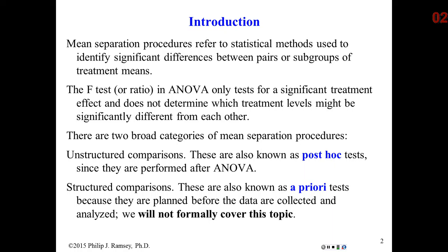An obvious question to a scientist or engineer is: you think there are differences in the response between different levels of the factor, but which ones are different? That turns out is not an easy question to answer — in fact, there is no perfect answer to it. ANOVA simply says some of the treatment levels are different; it doesn't tell you which ones. We're going to focus on what are called unstructured comparisons — different ways of statistically comparing the different treatment means. Some people refer to this as post hoc analysis, that is, analysis done after the original ANOVA.